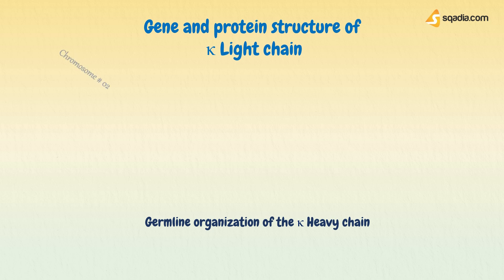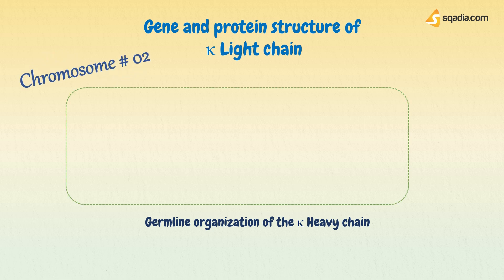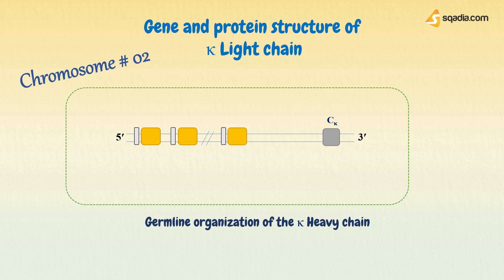Let's look at the gene and protein structure of the kappa light chain. The gene segments for kappa light chain reside on chromosome number two in the human genome. A single exon codes for the constant region of the kappa chain, often referred to as the C kappa gene. The variable region is coded by two exons: most of the variable part is coded for by a single exon called the kappa variable gene, or V kappa.